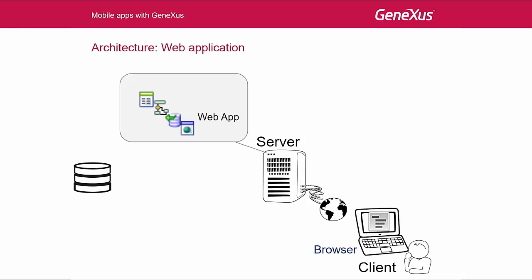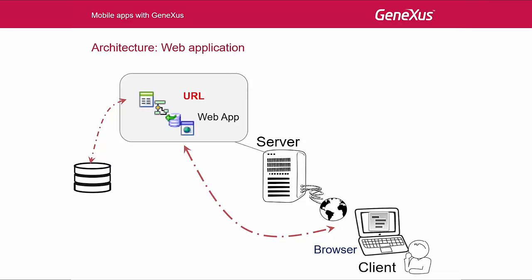We run the web application from a URL that runs, for example, WorkWithCountries. This WebPanel object queries the database and returns the data to the client, for the browser to build the layout that will be displayed to the user as an HTML that responds to his request.